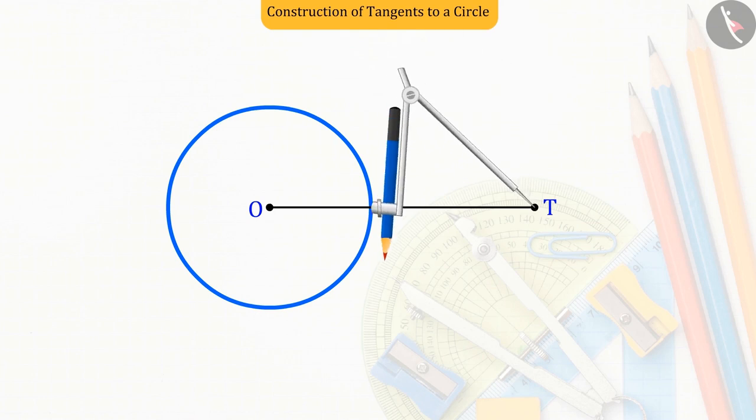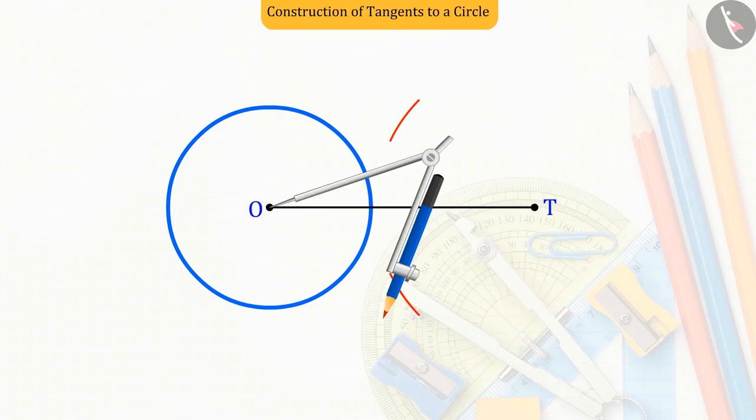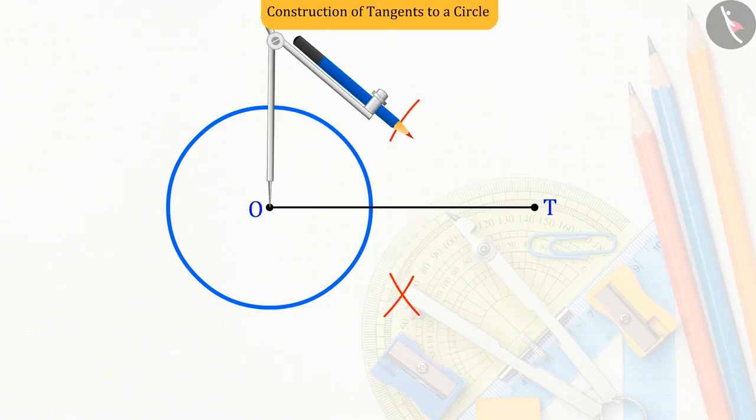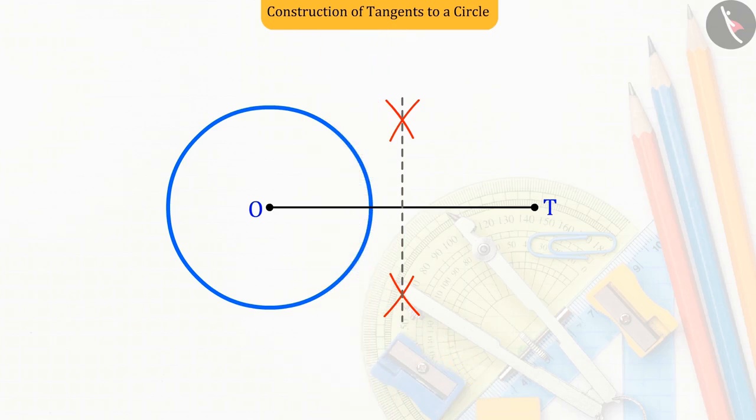So now, let us bisect the drawn line segment OT, from which we get the midpoint M of the line segment OT, which divides the line segment OT into two equal parts OM and MT.